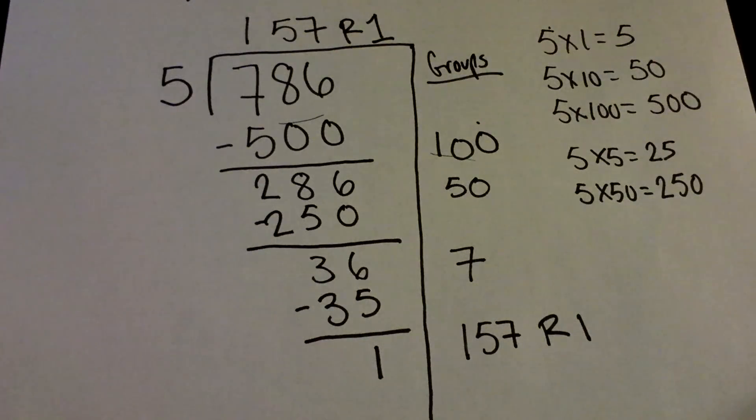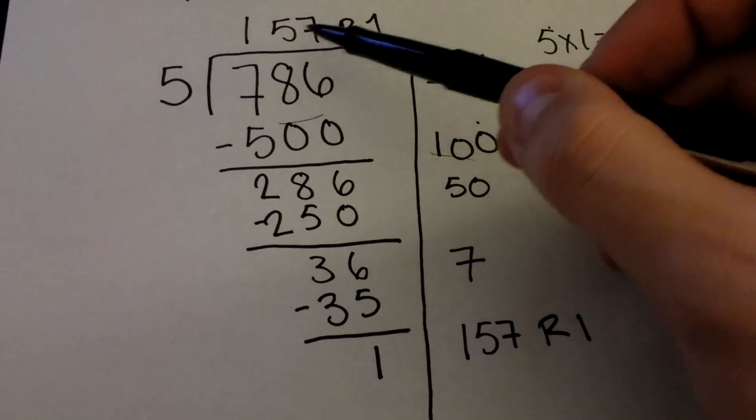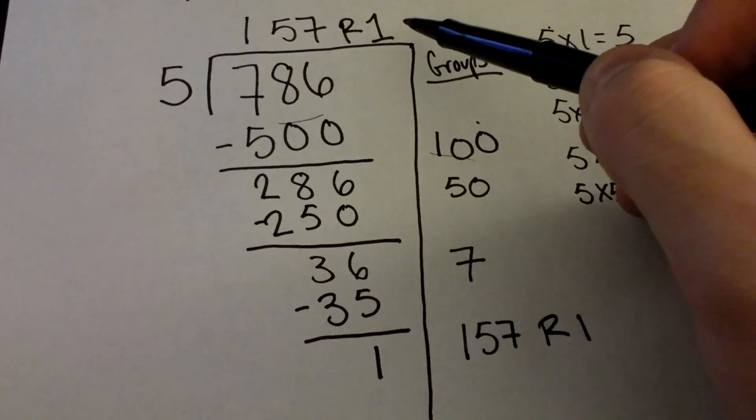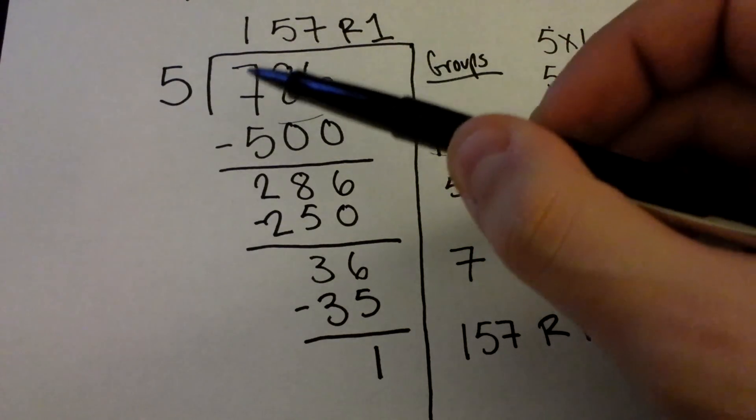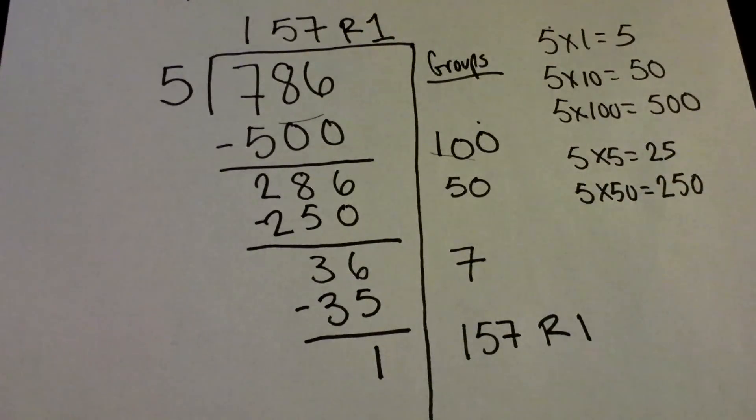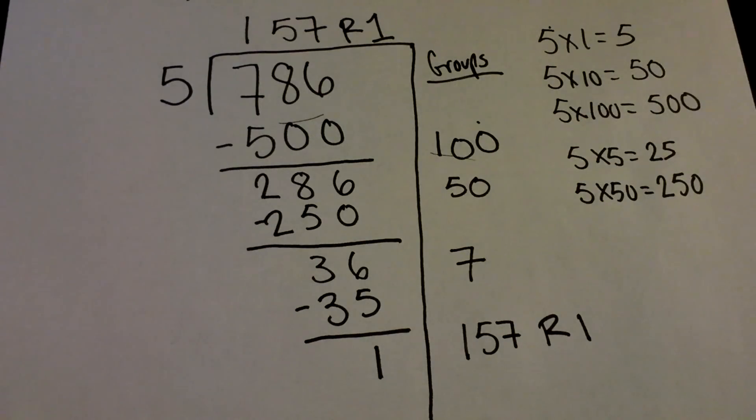We can check this by doing a multiplication problem of 157 times 5 plus our remainder 1, and you will get our original dividend of 786. I hope that helps clarify some of the partial quotient division questions.